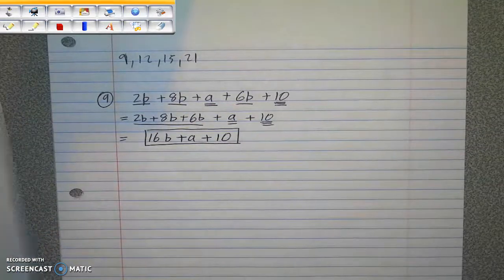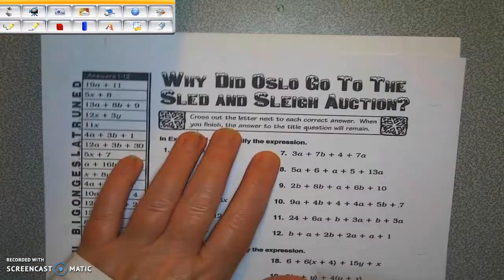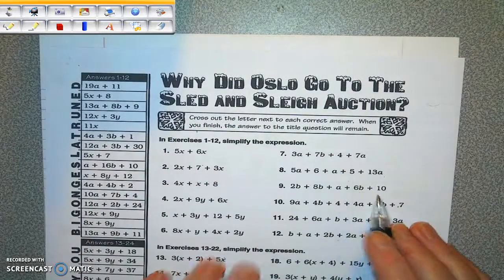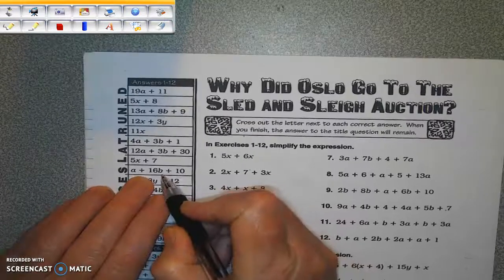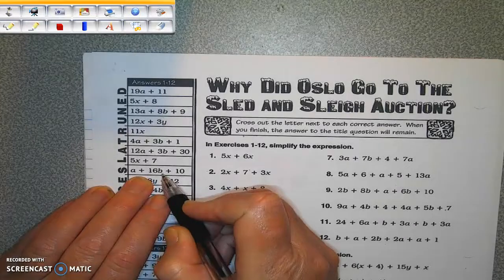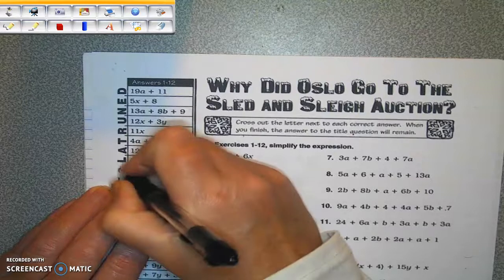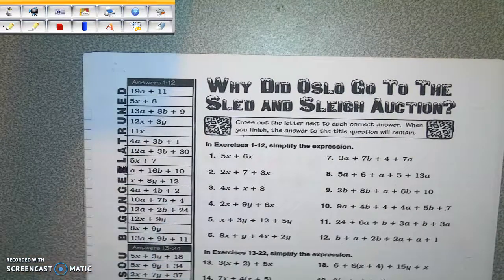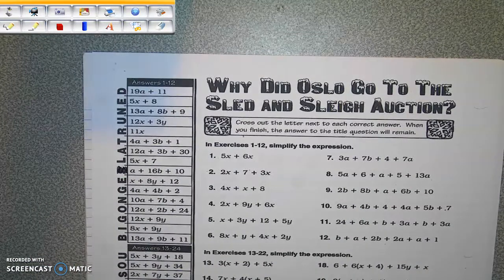So let's look back on the puzzle page at their instructions. It says cross out the letter next to each correct answer. So I'm looking for 16B plus A plus 10. Now they have it in a different order, but that's okay. They have A plus 16B plus 10, so I'm crossing out the S there. That's not part of my answer. When you finish, the answer to the title question will remain.